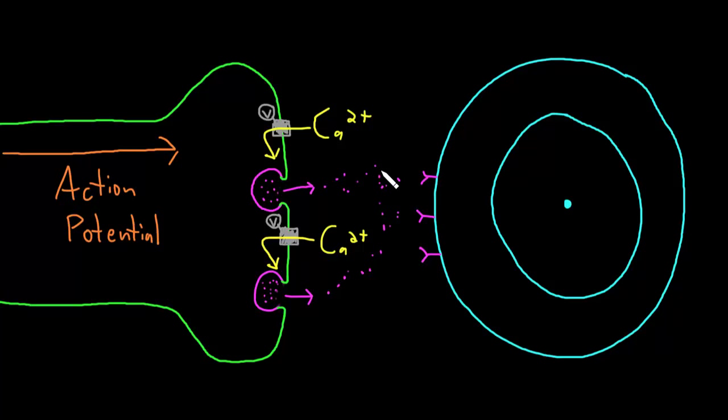The synaptic cleft is actually a very small distance, so the neurotransmitter has no problem diffusing across and binding to its receptor on the postsynaptic membrane of the target cell. Now recall that the information contained in action potentials is really contained in the frequency and the duration of a train or series of action potentials being fired down the axon. That information is now going to be converted into the amount and the duration that neurotransmitter is present in the synaptic cleft.